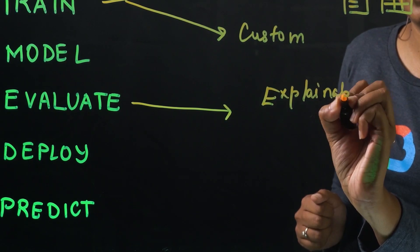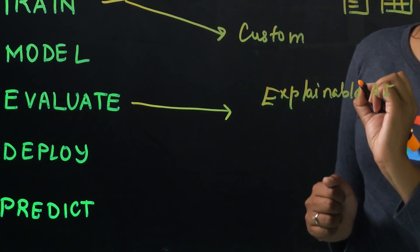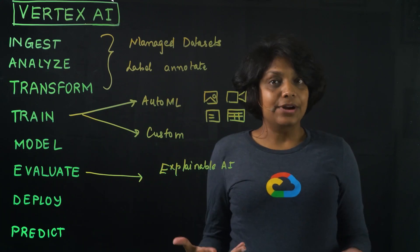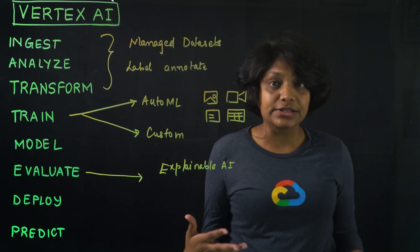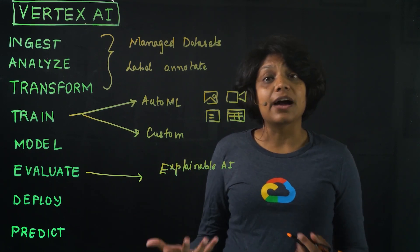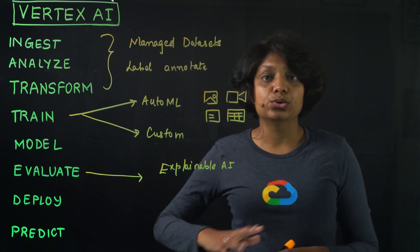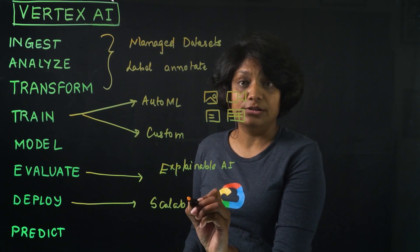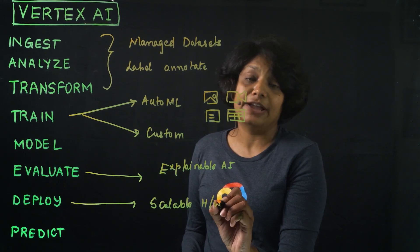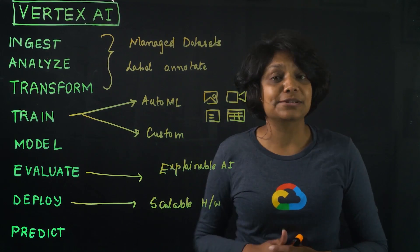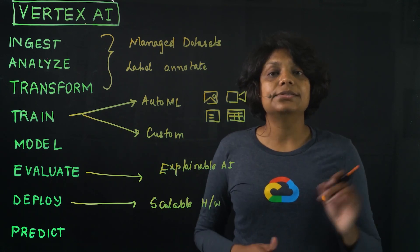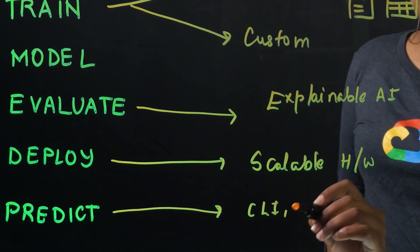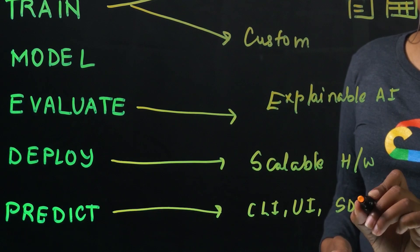You do that with Explainable AI, which lets you dive deeper into your model and understand which factors are playing a role in defining what that model is predicting. Once you're happy with the model, you deploy it to an endpoint to serve it for online predictions using the API or the console. This deployment includes all the physical resources and the scalable hardware needed to scale that model for lower latency and online predictions. You can also use the undeployed model for batch predictions, and get predictions using either the command line interface, the console UI, the SDK, or the APIs.